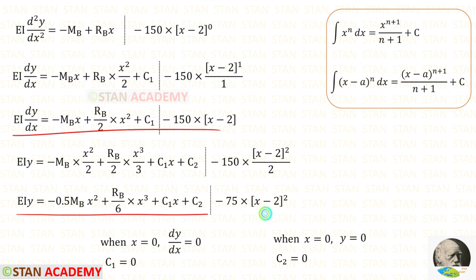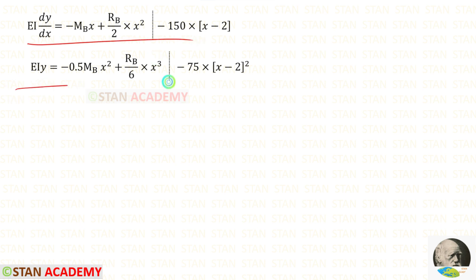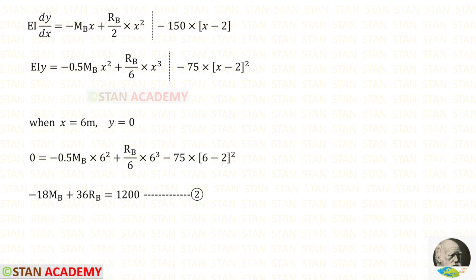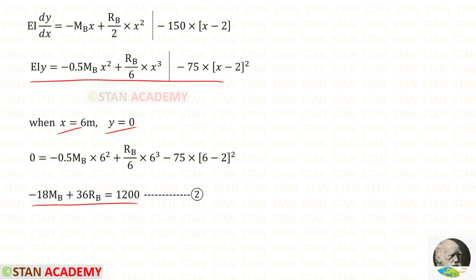Substituting C1 and C2 into the slope and deflection equations gives us two equations. At point A there is also a fixed support, so when X is 6 the slope dy/dx equals 0. Applying this to the slope equation gives Equation 1. Similarly, at the fixed support there is no deflection, so when X is 6 the deflection y equals 0. Applying this gives Equation 2.